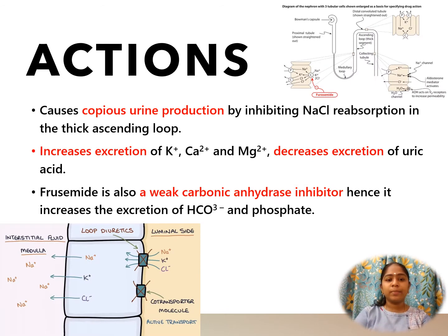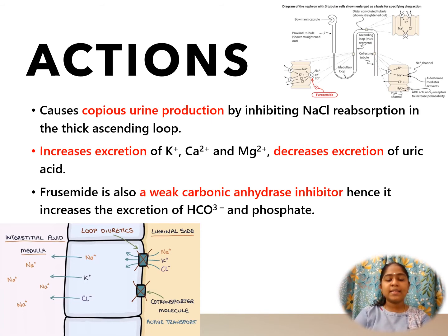Actions of furosemide: Furosemide causes increased urine production by inhibiting sodium chloride reabsorption in the thick ascending limb. It increases and enhances the excretion of sodium, calcium, and magnesium. Though calcium is excreted, it is again reabsorbed in the distal convoluted tubule.